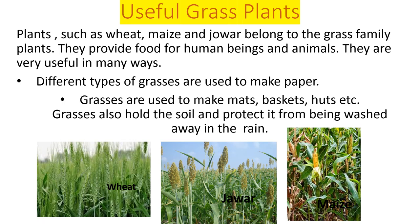Now we will look at some useful grass family plants. Plants such as wheat, maize, and jowar belong to the grass family. In this slide you can see wheat, maize, and jowar. They provide food for human beings and animals — we make rotis from wheat, maize, and jowar.